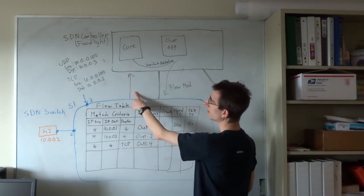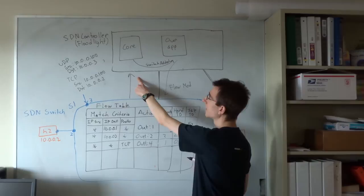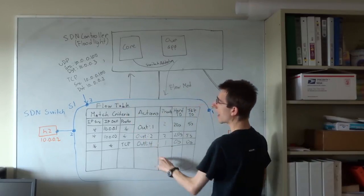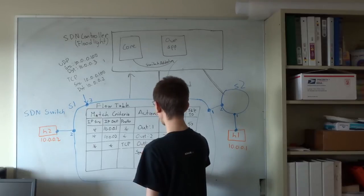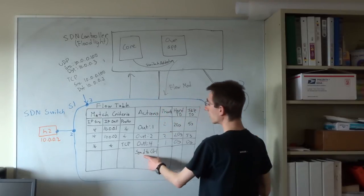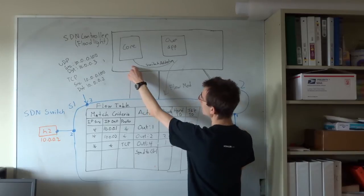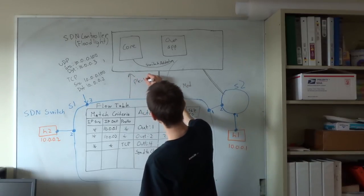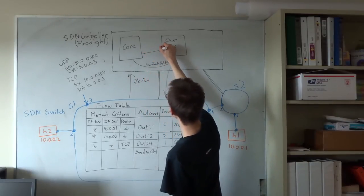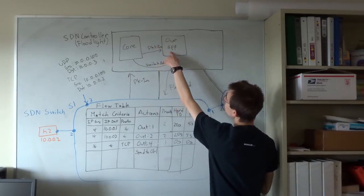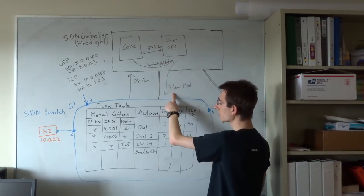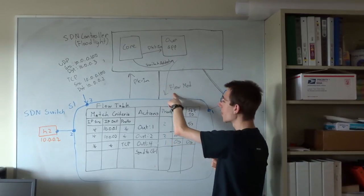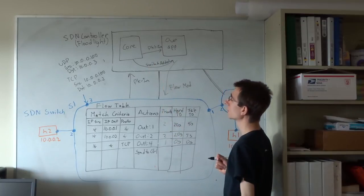Another event is the packet-in event. When a packet doesn't match an entry in the flow table, or if an entry specifically says that a packet should be sent to the controller, that packet will be sent as a packet-in event to the core Floodlight module. The core Floodlight module will notify any applications that are interested in these packet-in events. These applications can then install or remove rules using flow mods based on the packet that was received.